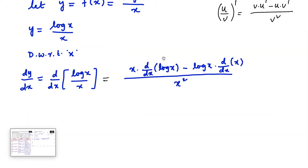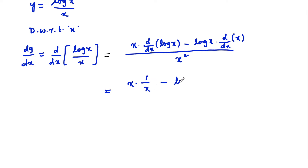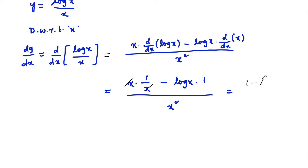Which on simplifying: x into differentiation of log x is 1 upon x, minus log x into d by dx of x is 1, upon x square. We can simplify here — x and x get cancelled. So 1 minus log x upon x square. So we have dy by dx is equal to 1 minus log x upon x square.